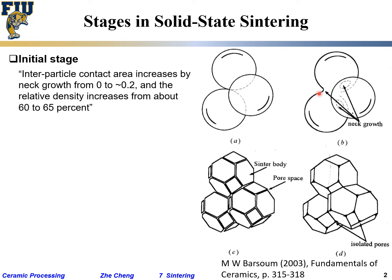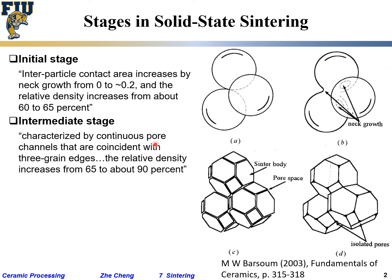In the intermediate sintering stage, the particles can no longer be treated as spheres because they touch each other flat. The shape model changes — like a cube with cut corners. Between the sintered particles there is a connected network of pores, like a continuous pore channel that connects all of them together. This stage covers roughly 65% to 85–90% relative density.